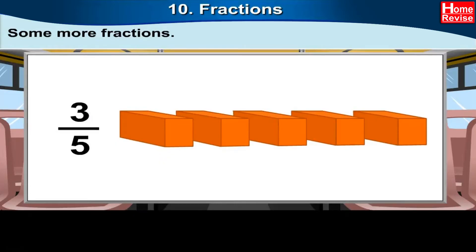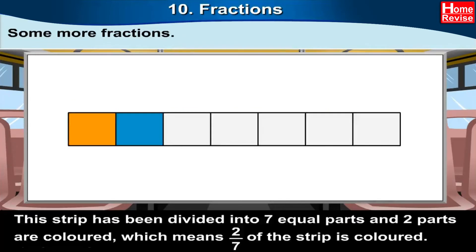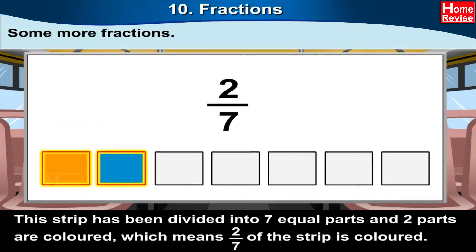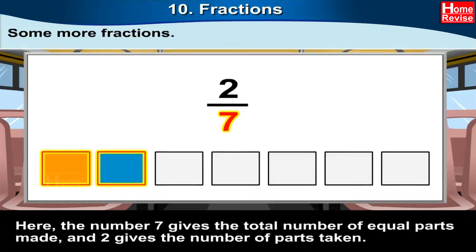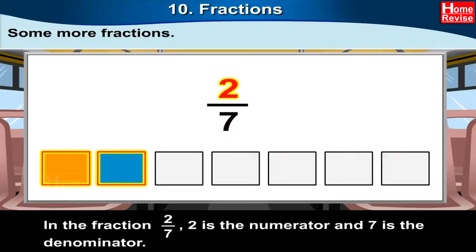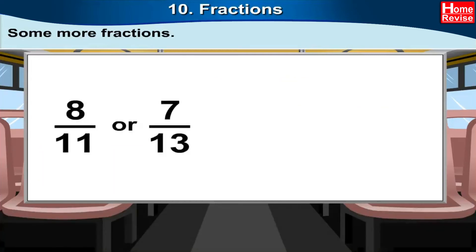Here the denominator five shows how many equal parts are made of the whole, and the numerator three shows how many of those are taken. This strip has been divided into seven equal parts and two parts are colored, which means two upon seven of the strip is colored. The number seven gives the total number of equal parts made, and two gives the number of parts taken. In the fraction two upon seven, two is the numerator and seven is the denominator.